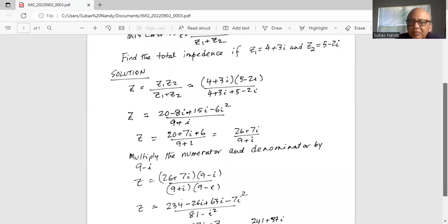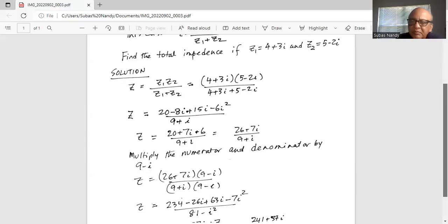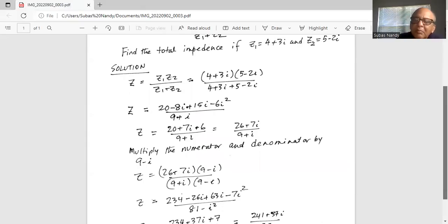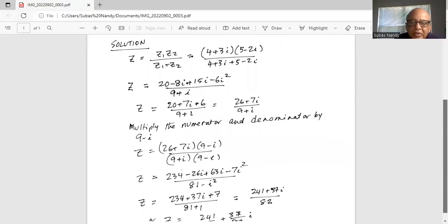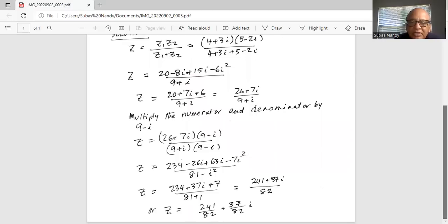Now we will multiply the numerator and denominator by the conjugate of 9 plus i, which is 9 minus i. Plus i is replaced by minus i. So it is 9 minus i in the numerator and 9 minus i in the denominator. Now in the numerator, we FOIL it.